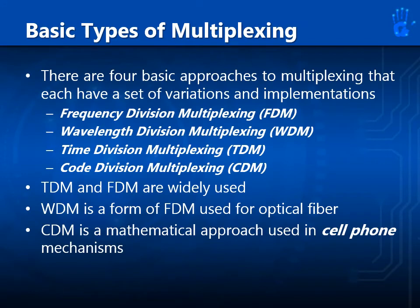There are four basic approaches to multiplexing. First, we have frequency division multiplexing or FDM. Then we have wavelength division multiplexing or WDM. Next, we have time division multiplexing or TDM. And lastly, code division multiplexing or CDM. TDM and FDM are widely used. WDM is a form of FDM used for optical fibers. CDM is a mathematical approach used in cell phone mechanisms.